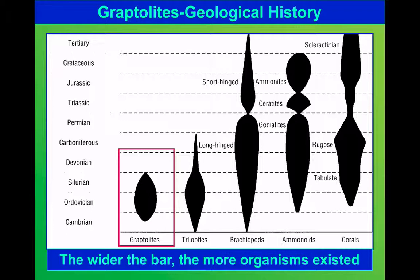This diagram showing the diversity of different types of fossils over time shows us the short but quite diverse existence of the Graptolites, appearing in the Cambrian and, to a large extent, disappearing by the end of the Silurian. There were a few survivors that straggled on into the Carboniferous, but not ones that are particularly useful for us as geologists.